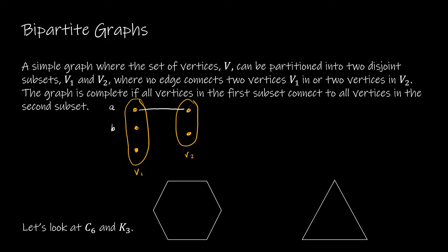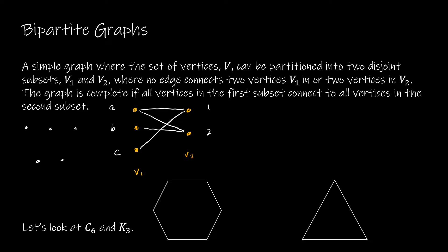Let's call the vertices A, B, C and 1, 2. So A connects to 1 and 2, B connects to 2, and C connects to 1. This is a bipartite graph because there's no line connecting any two vertices in the same subset. Most of the time you won't have those circles around it. You'll also see it drawn with the two sets of vertices arranged in parallel — either vertically or horizontally — but those represent the same graph.